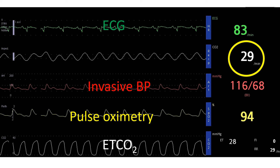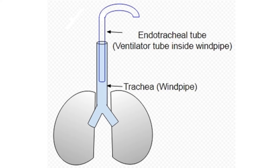Invasive blood pressure monitoring using a small tube inserted into the blood vessel at the wrist shows a blood pressure of 116 by 68 mmHg. The remaining tracing is of pulse oximetry, which shows an oxygen saturation of 94%.